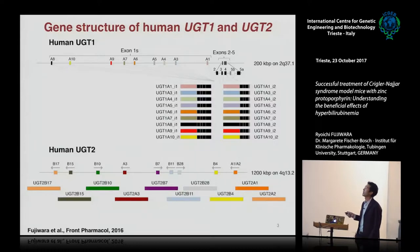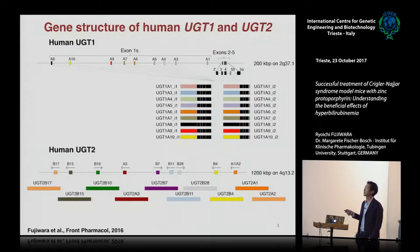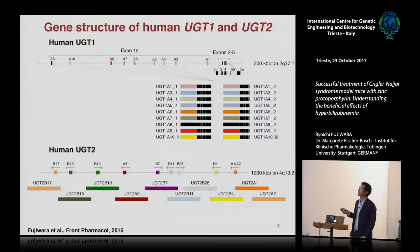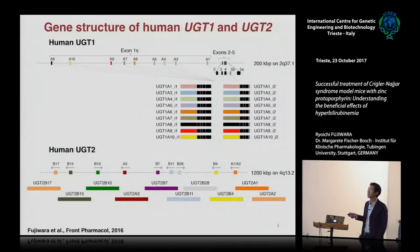Recently, a research group in Canada found that there are actually two different exon 5s, exon 5a and 5b. So now there are nearly 20 UGT1a subfamilies, including variant 1 and variant 2. This is the exon-sharing system. On the other hand, UGT2 families have individual genes for each member. For example, UGT2B7 is important for the metabolism of morphine.